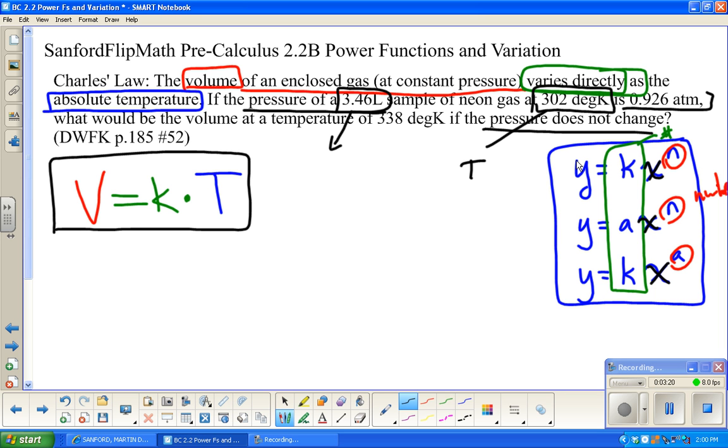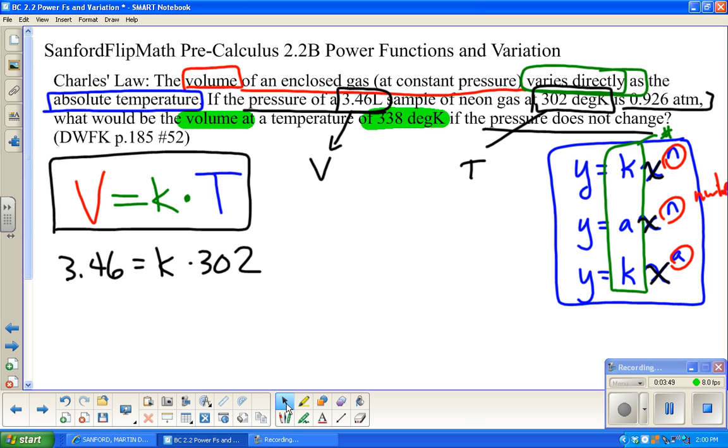If the pressure of a 3.46 liter sample of neon gas at 302 degrees Kelvin... We don't have anything about pressure in our equation. We're going to assume that's held constant. I do need that volume. So, 3.46 equals K times temperature, 302. I'm using this initial information to find a value for K.